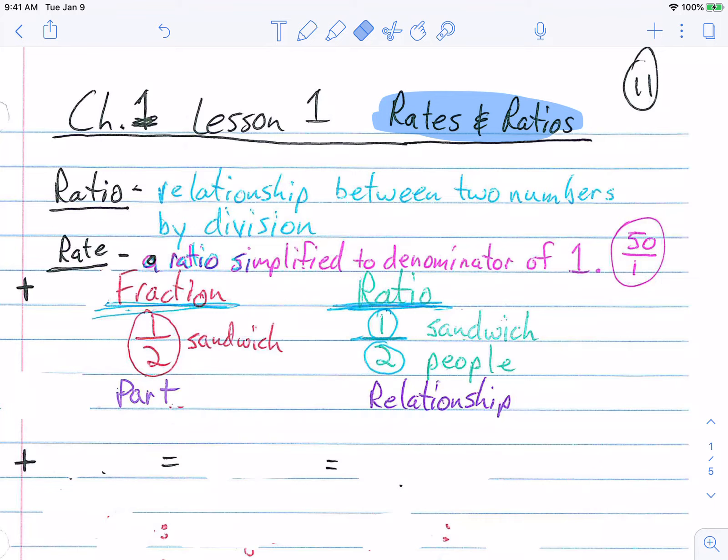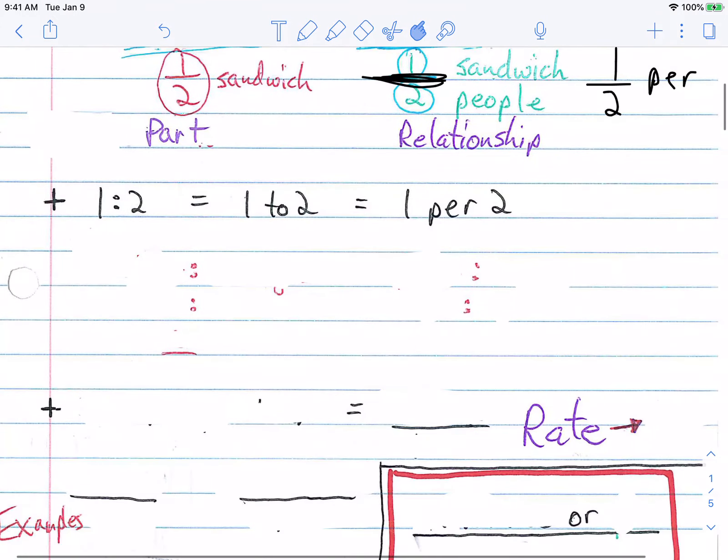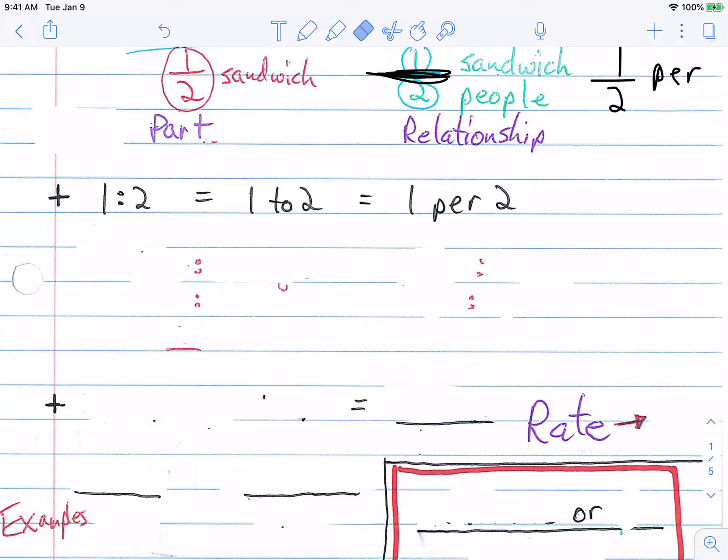A ratio can also be written in different ways. Instead of just a fraction, it can be written with a colon. So one to two or one to two using TO or one per two. The fraction line right here, the fraction line is a per. Whenever you see per, it'd be one per two.